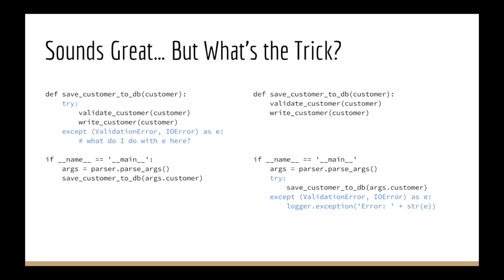The main block knows it's a command line application, so it's allowed to call log error or whatever your logging mechanism is — because at that point you know your environment. You're at the highest layers in your code stack. You could have something similar for a GUI application, and the same for a web application. Just keep moving the try-except up, up, up until you cannot move it up any further.